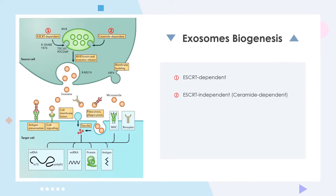Related proteins include PLD2, DGK-alpha, etc. After MVB fuses with the cell membrane, exosomes are secreted. This process relies on small GTPases such as RAB27A, RAB27B, RAB7, RAB11, RAB31, and RAB35 in some cells, or SNARE family proteins like YKT6, VAMP7, and so on.